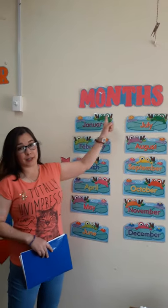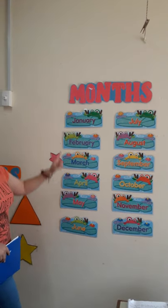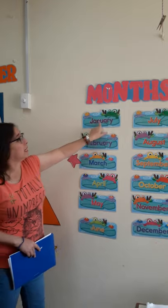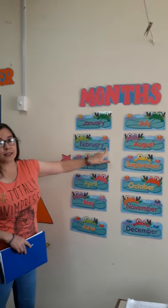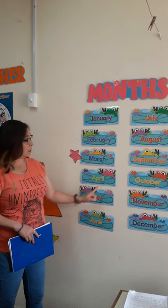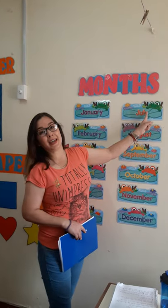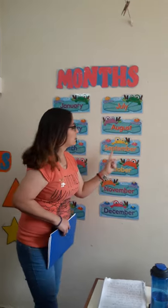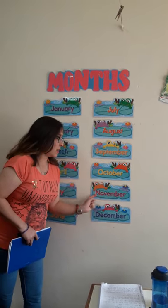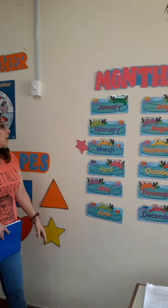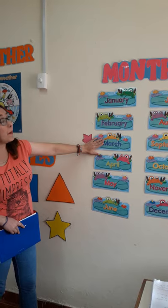Now we have the months of the year. Repeat after me: January, February, March, April, May, June, July, August, September, October, November, December. Those are the months of the year, and we are in March.